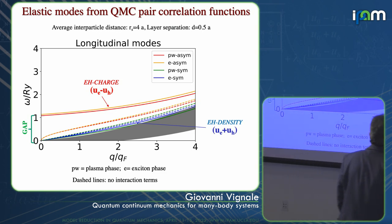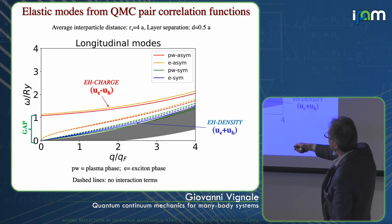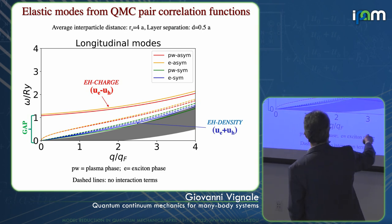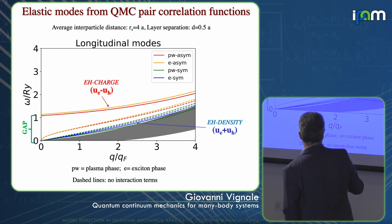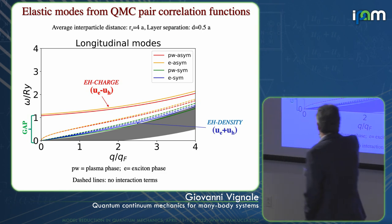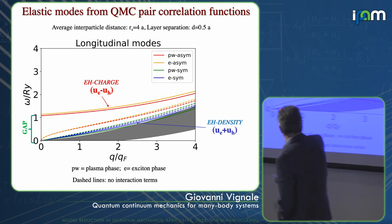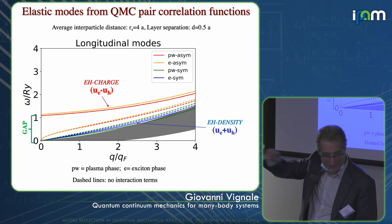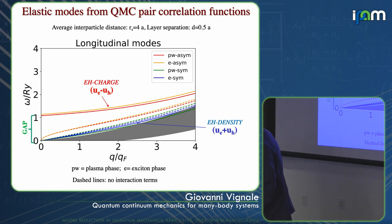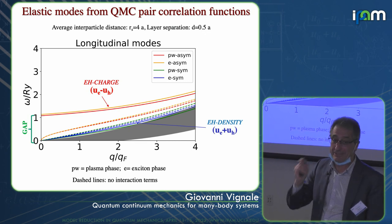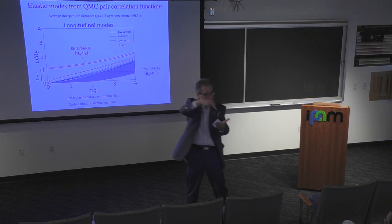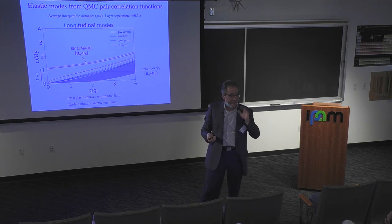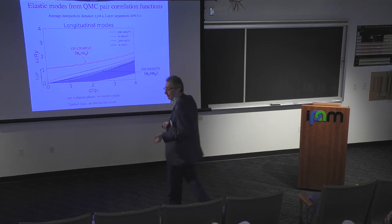Why is this surprising? Because in the three-dimensional electron gas there was a plasmon at q equals zero with finite frequency. But in two dimensions, the two-dimensional plasmon goes to zero frequency when q equals zero — strictly speaking there is no gap, although the frequency picks up as square root of q. So the two-dimensional electron gas in the longitudinal channel is gapless. Yet when we do this calculation, instead of finding something that goes as the square root of q, we find something going to a finite value. It's also pretty large, depending on the parameters — density, separation between layers.